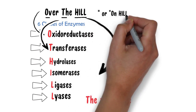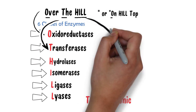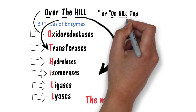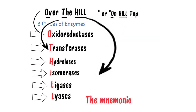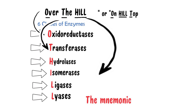If you find it difficult to remember 'Over the Hill,' you can also remember 'On Hilltop.' In this mnemonic, O represents oxidoreductases, H-I-L-L represents hydrolases, isomerases, ligases, and lyases respectively, and T of 'Top' represents transferases.